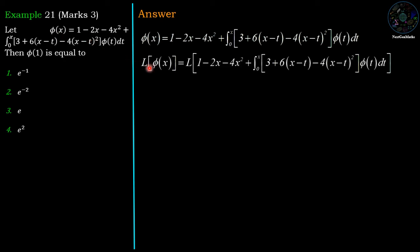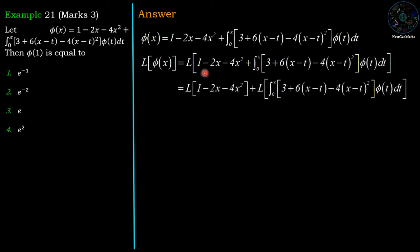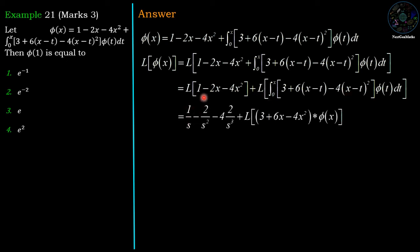Applying Laplace on both sides: Laplace of phi(x) = Laplace of (1 - 2x - 4x²) plus Laplace of the integral. Laplace of 1 is 1/s, minus 2 times Laplace of x is 1/s², minus 4 times Laplace of x² is 2/s³, plus Laplace of the convolution between the polynomial (3 + 6x - 4x²) and phi(x).